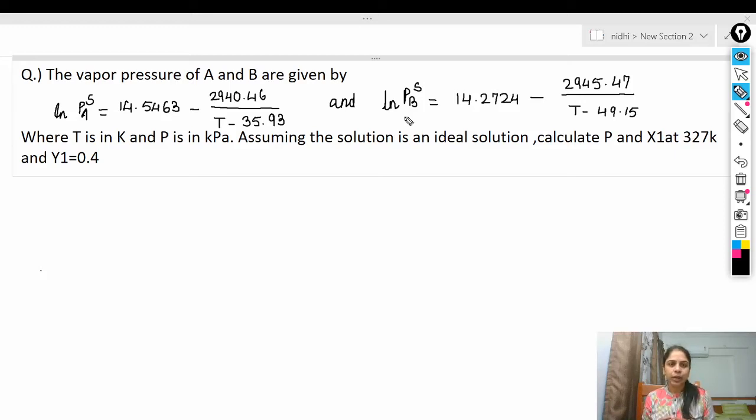Hello students, today I'm here to discuss some numerical problems based on vapor-liquid equilibrium data. Here we are going to use the Antoine equation. So the question is: the vapor pressure of A and B are given by these two relationships, which is known as the Antoine equation.